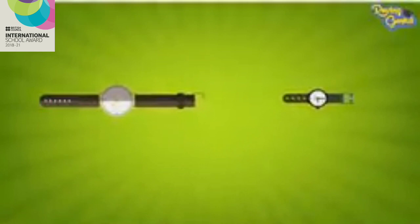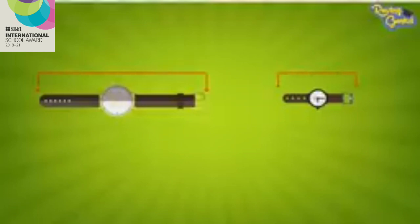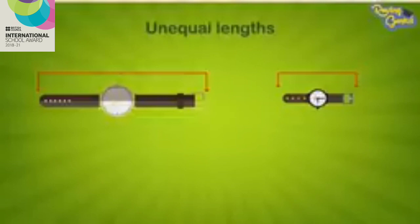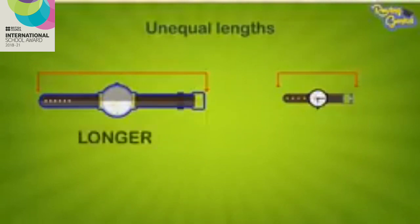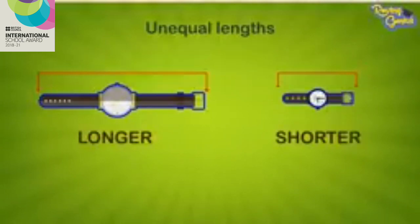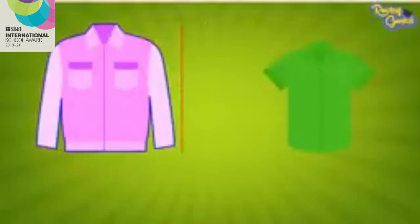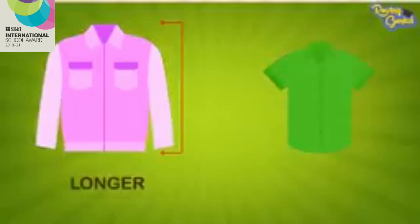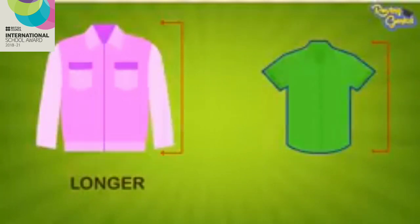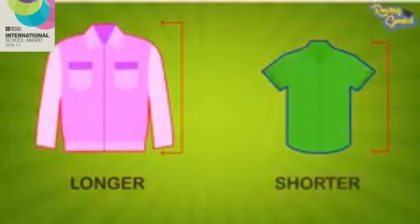Now we shall compare two objects on the basis of their lengths. When we have two objects of unequal lengths, one object is longer and the other is shorter. For example, here the pink shirt is longer than the green shirt, or we can say that the green shirt is shorter than the pink shirt.